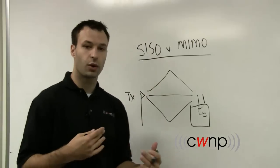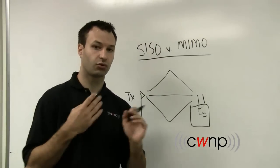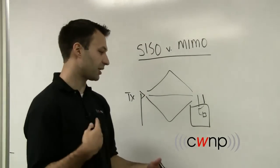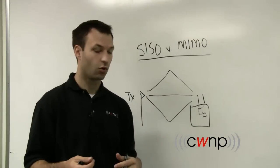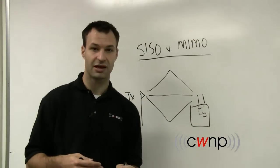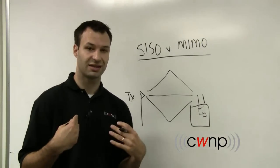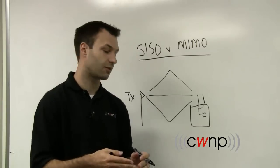So then, depending on which one receives the signal, the same one will then transmit the next signal. And that will happen every time you receive a data frame or any type of 802.11 frame, is that it will receive on the best antenna and then transmit back out that same one.